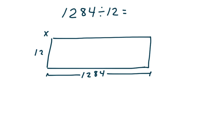Here we have a total area of 1,284 square units in this rectangle. We're going to divide it by the divisor 12. So get your area model set up on your table. We need a large rectangle this time.